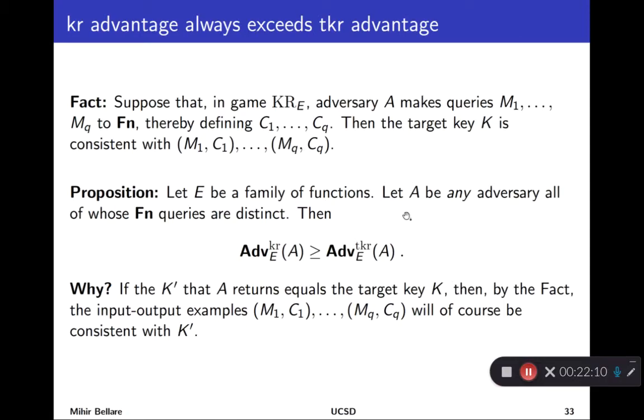Why is that? Well, the key observation is that the target key is always consistent with the input-output examples coming from your oracle. So, in case I didn't say before, we call this FN procedure an oracle because it's something kind of in the sky given to the adversary. So, the FN oracle will return C1 in response to M1, C2 in response to M2, and so forth. And we know that they are related by C1 equals E of K and M1, and so forth, where K is the target key. That, by definition, means the target key is consistent with this input-output example list. So, if the adversary returns a target key, it will definitely win both games, but it could win this consistent key recovery game even without returning the target key.